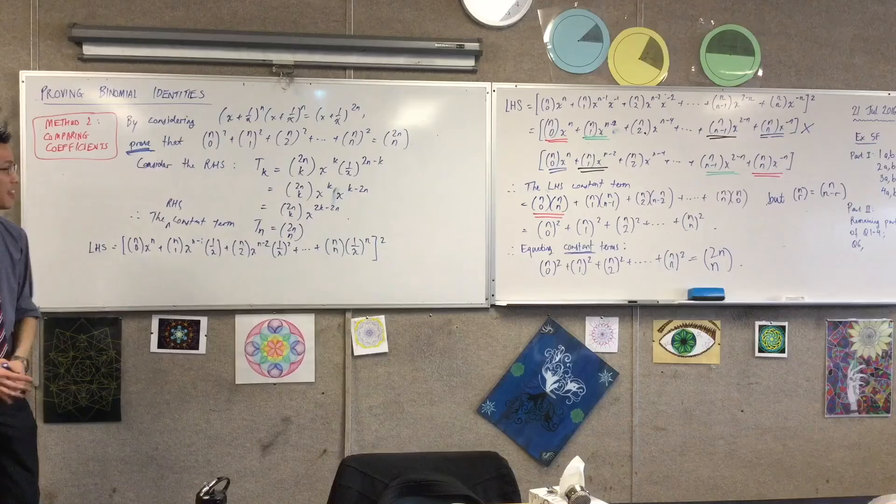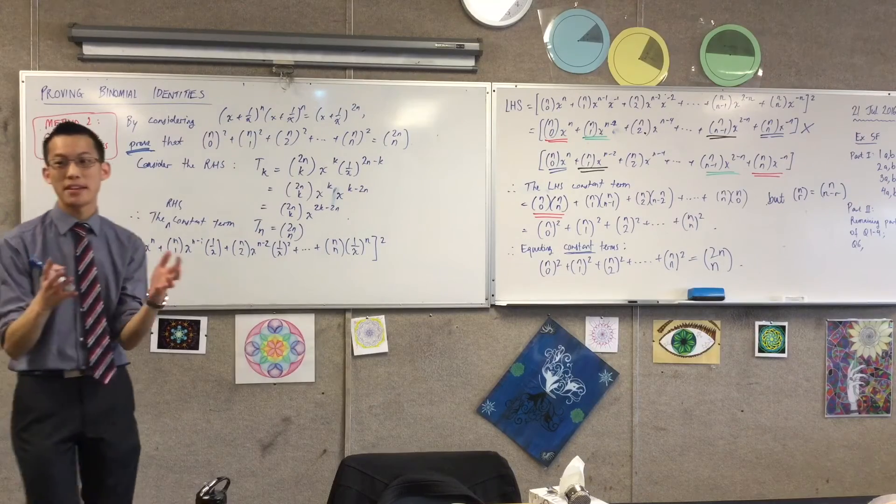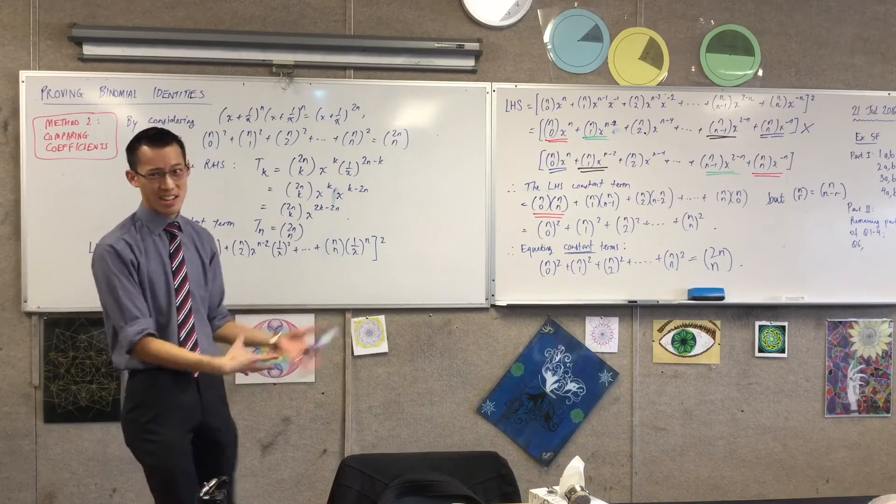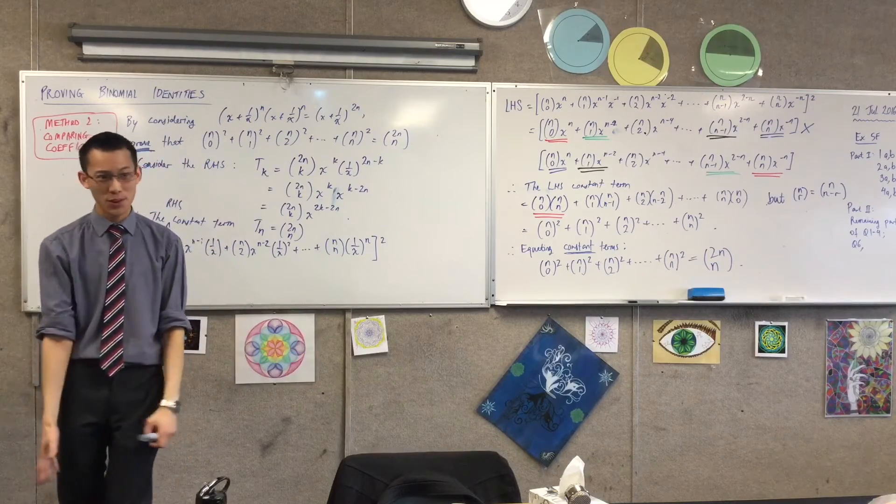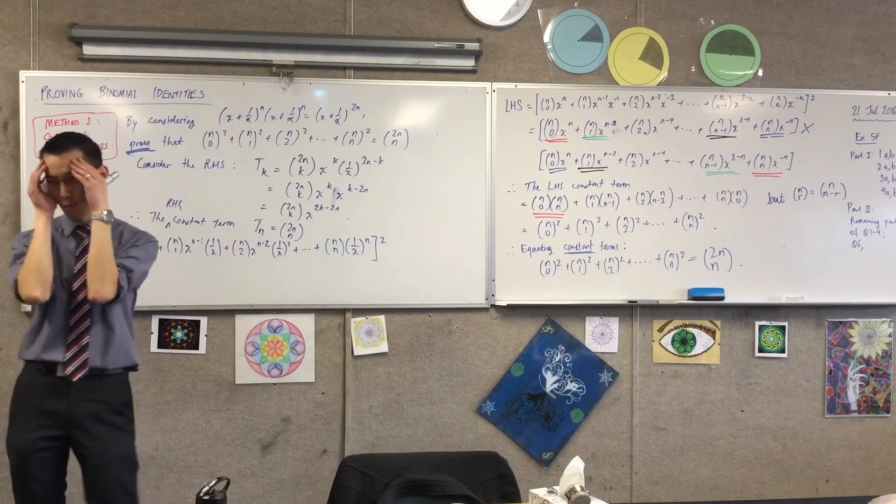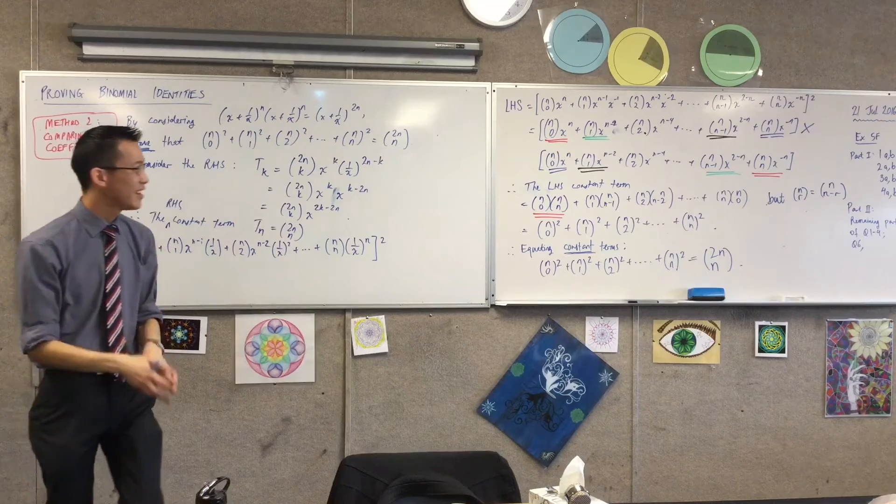That was a lot of work. That was really hard. This is what makes it harder identities. Now I will point out to you, part of what makes this hard is because you've never seen any of these before. So so many of these steps are like, what? Why? Why do we do that?